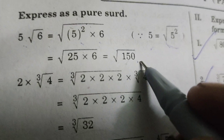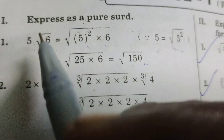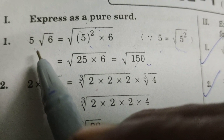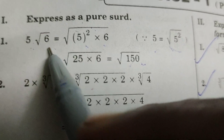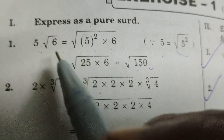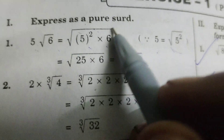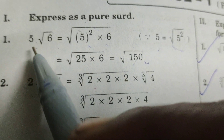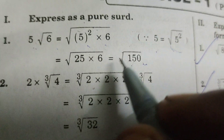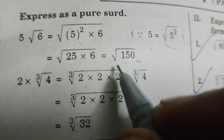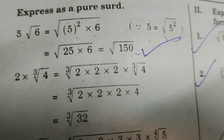Square root of 150 is the value of 5 root 6. That means 5 root 6 equals square root of 150. Thank you.